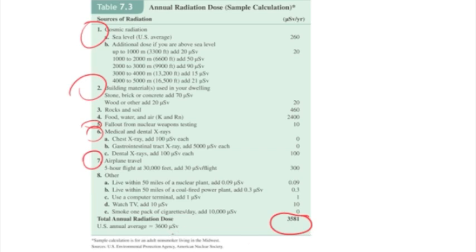But it's not sieverts, it's micro-sieverts. So that's micro is 3,600 times 10 to the negative 6 sieverts.